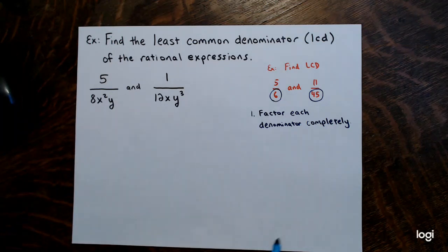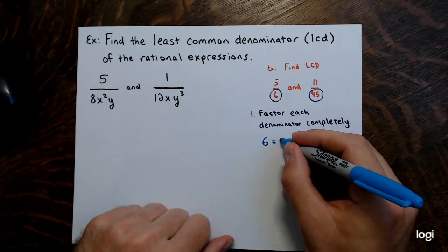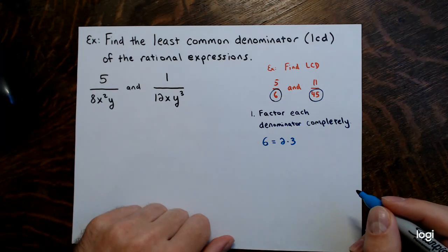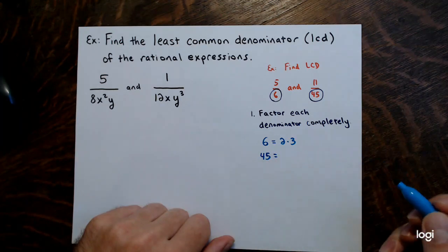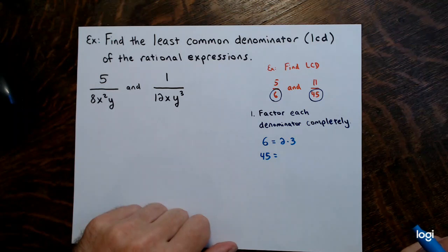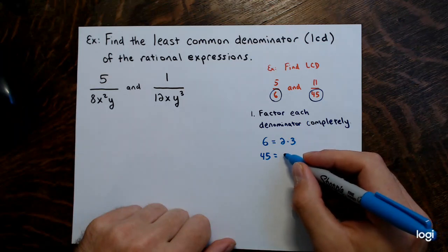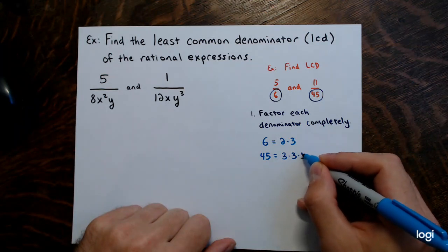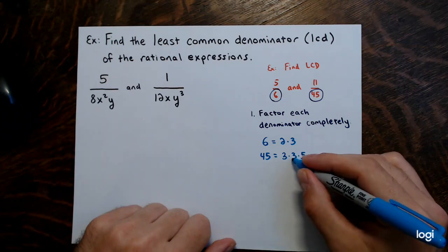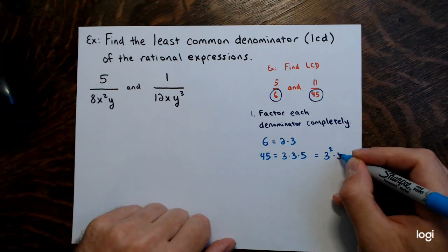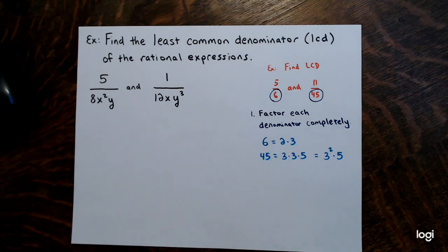For this example, the denominator 6 factors completely as 2 times 3. The denominator 45 factors as 5 times 9, and 9 breaks down further to 3 times 3, so 45 = 3 times 3 times 5, or 3 squared times 5. That is 45 broken down to its prime factorization.